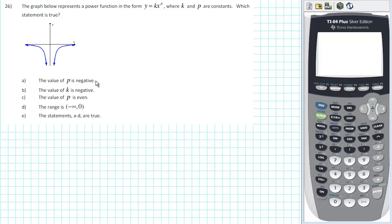To investigate, let's pick a value of p that is both negative and even, and a value of k that is negative. For example, we might pick p = -2 and k = -1.